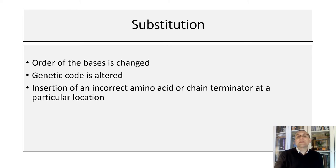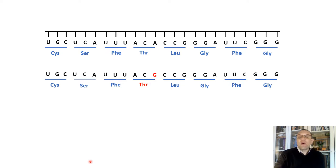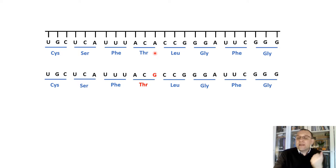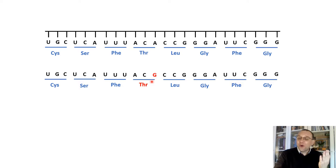What we've learned so far is that during substitution, the order of the bases is changed and the genetic code is altered — resulting in insertion of an incorrect amino acid or chain terminator at a particular location. Now here is something interesting. We have a wild type codon ACA, which encodes for the amino acid threonine. A mutation occurs and A is substituted with G, but ACG also codes for threonine.